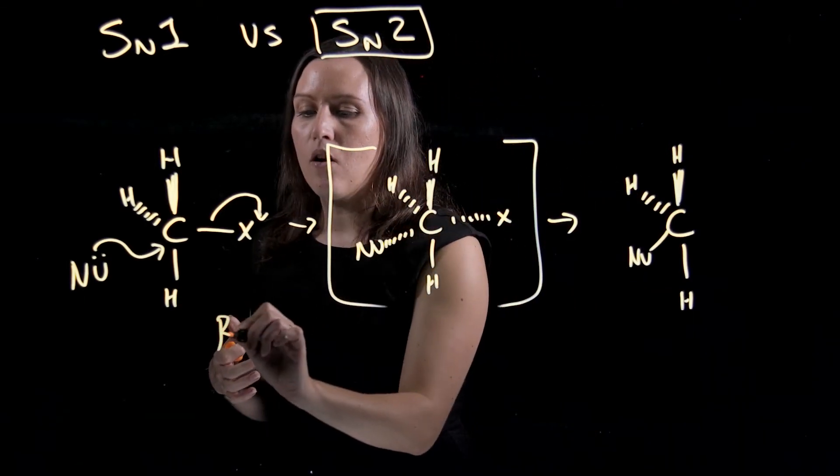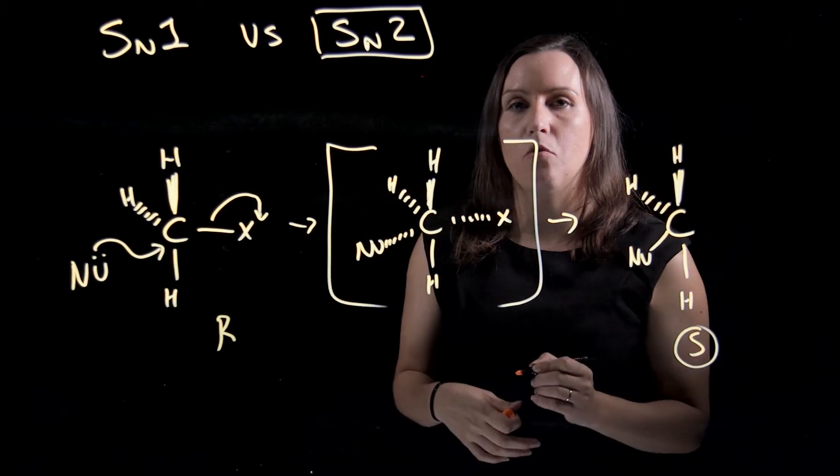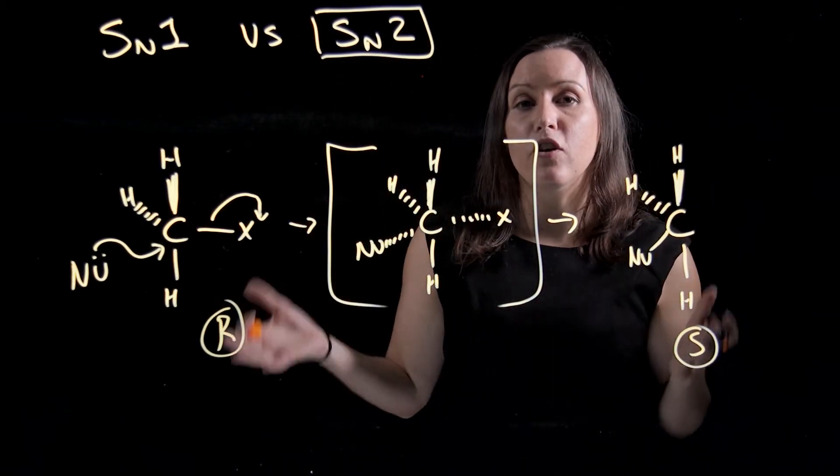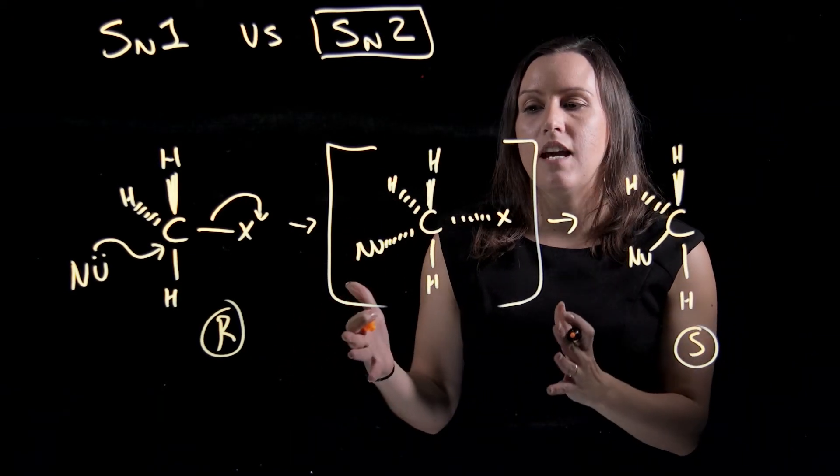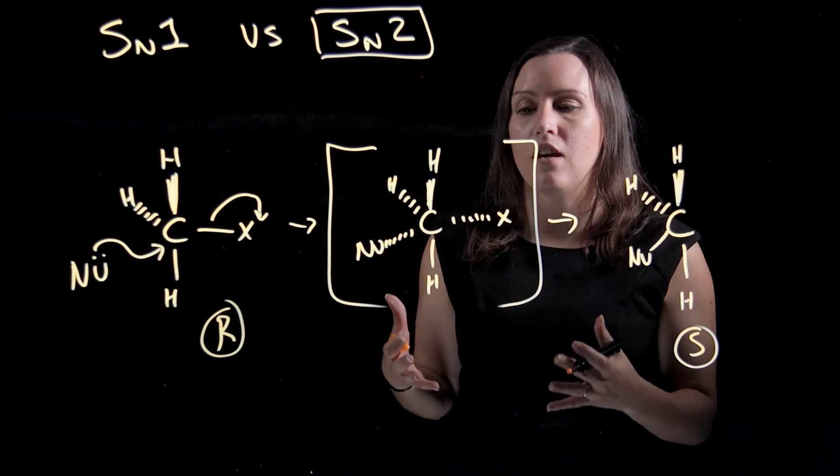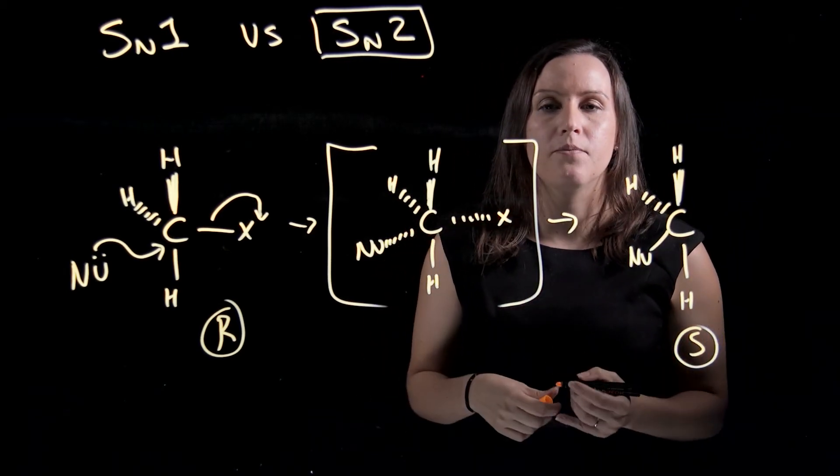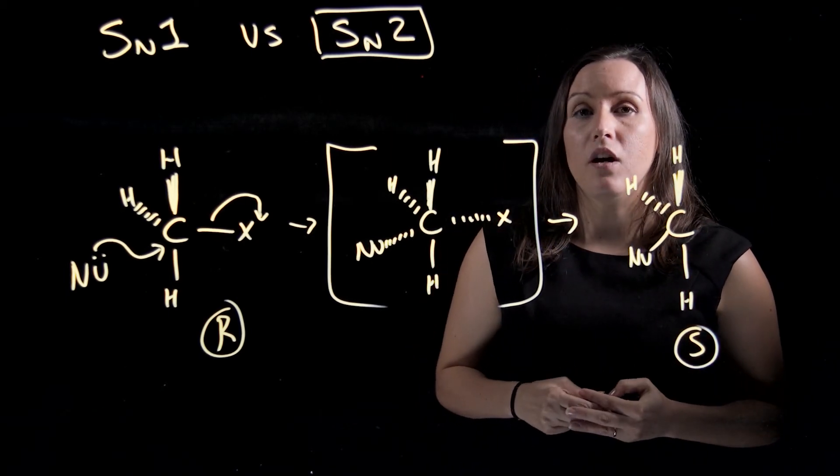So hypothetically if this one was an R compound we would get exclusively an S as the product. We've got an inversion of stereochemistry at the chiral carbon and we have a transition state where we have five things bonded to the carbon. Again these are partial bonds, they're not formal bonds. So that's the main differences between SN1 and SN2.